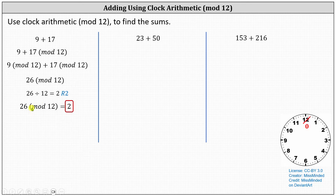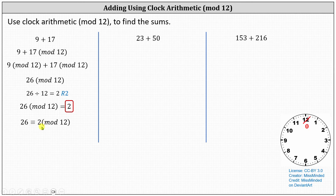Because 26 mod 12 equals 2, we can also indicate that 26 is congruent to 2 mod 12, written with three horizontal segments representing congruence. The congruence indicates that when divided by 12, both 26 and 2 have the same remainder.